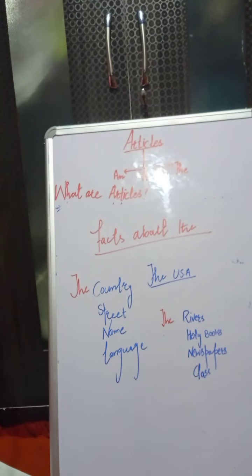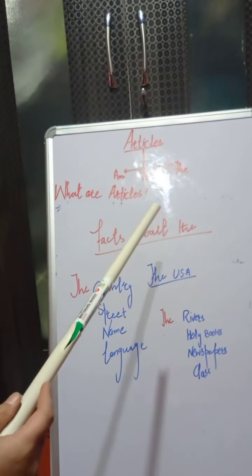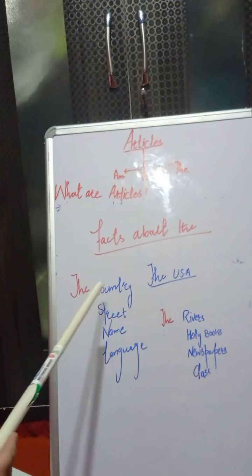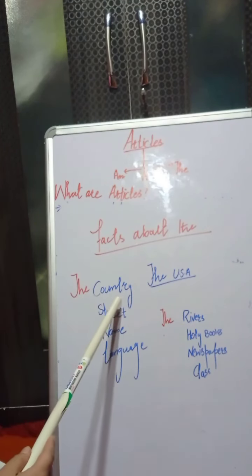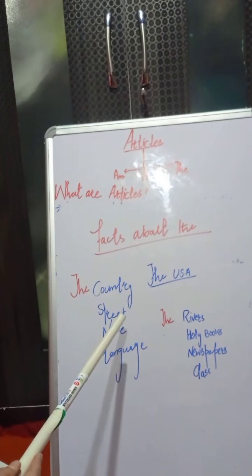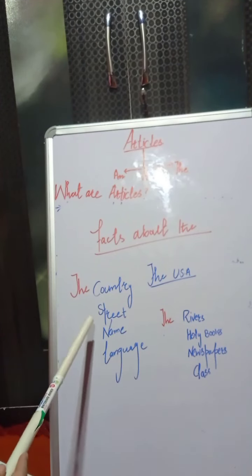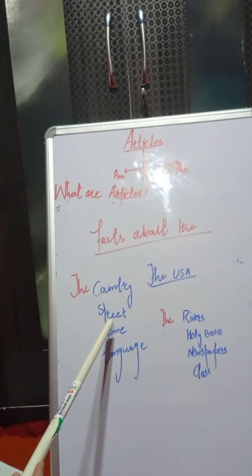We learned about where to use 'a' and 'an.' Now we will learn facts about 'the' — where we can use 'the' and where we cannot. Wherever there is a country's name, we cannot use 'the.' For example, 'the China,' 'the India,' 'the London' — these are incorrect. Also, we cannot use 'the' before the name of a street.